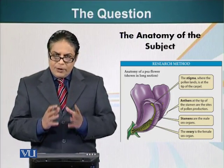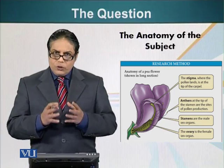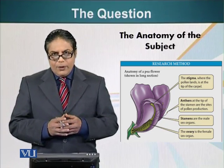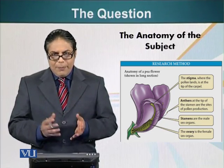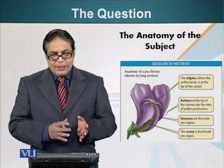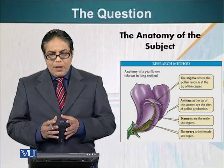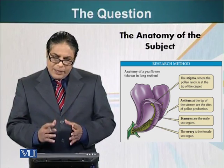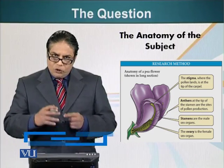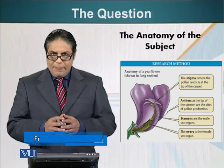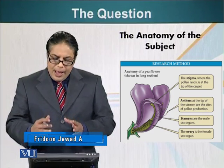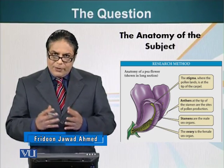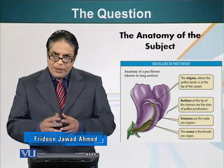Let me introduce to you Mendel's subject. Mendel was working on pea plants — these are the garden pea plants. These plants are easy to cultivate. They have a short lifespan, and they have several characteristics and traits that Mendel could follow.